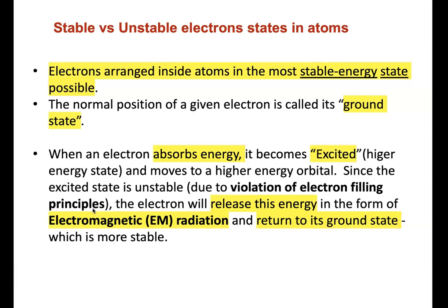The electron has to come back down into its home base, releasing the energy it absorbed in the form of electromagnetic radiation, and return to its ground state to be more stable. In a different lesson we will talk about the electromagnetic spectrum.